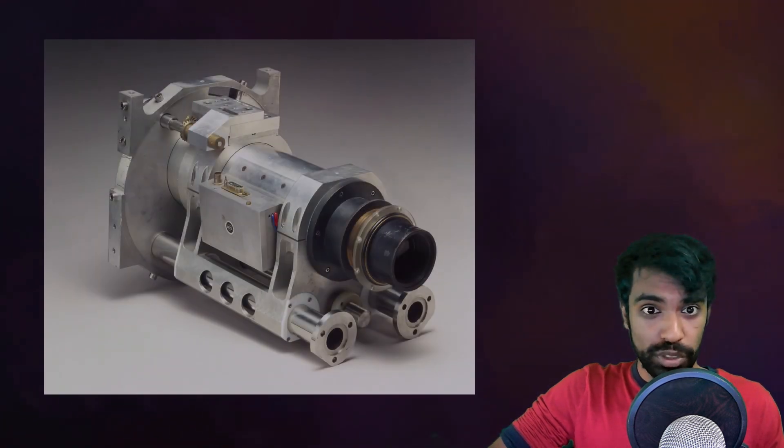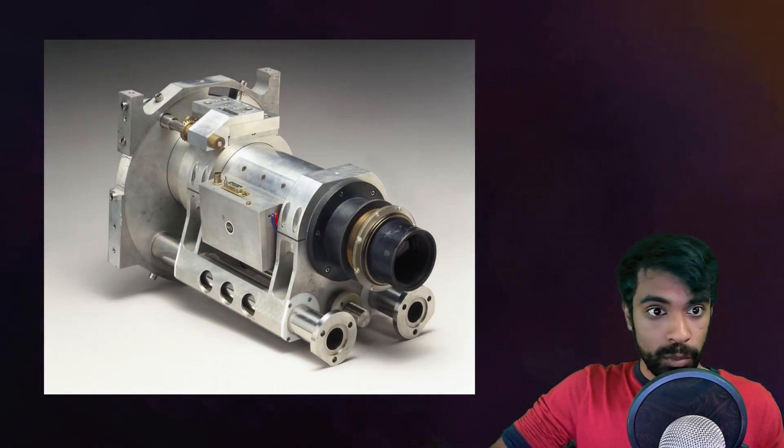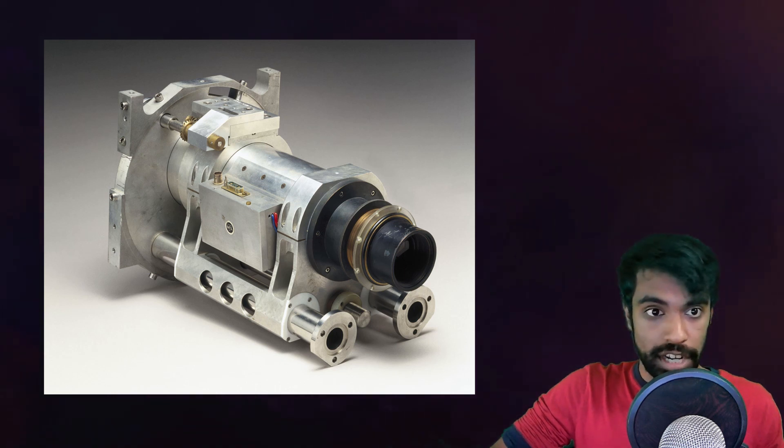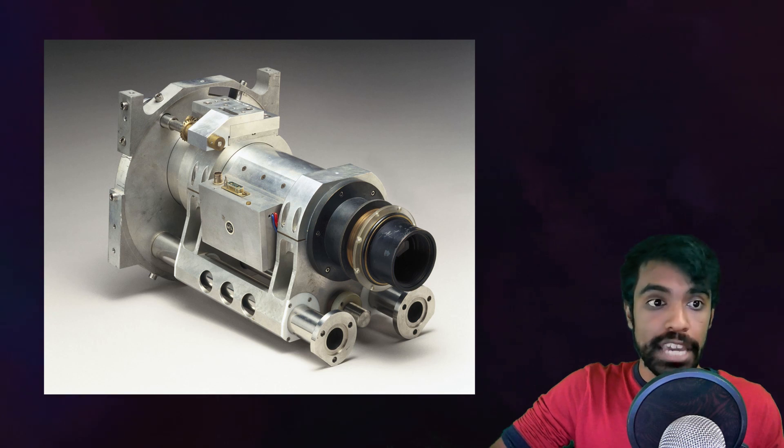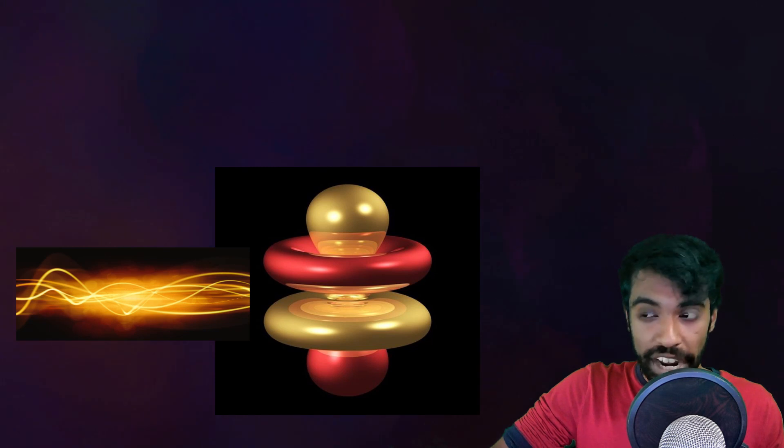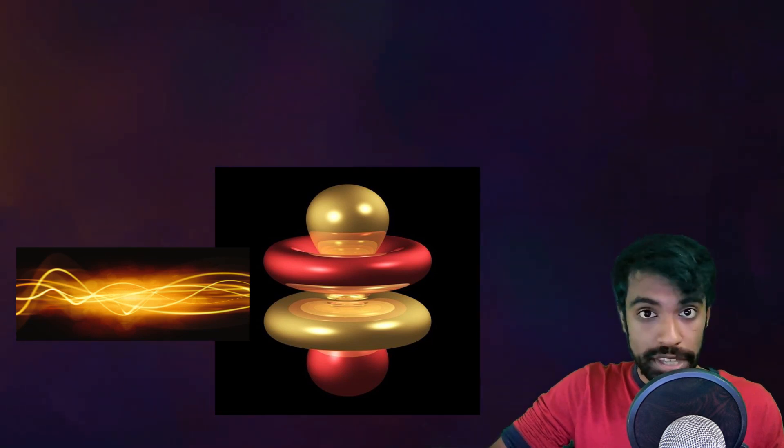What I believed, and I believed this for a long time without thinking about it critically, is that the properties of the electron, in this case where it is, gets created when the two particles interact. The particle of light gives the electron its properties. And in fact, the electron should do the same to the photon, because the photon is also a quantum object.